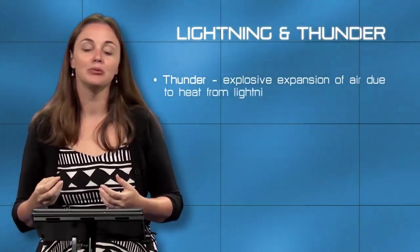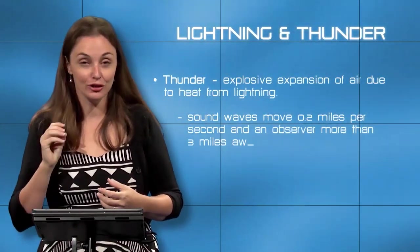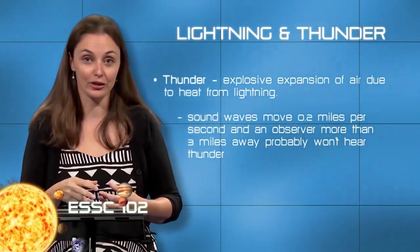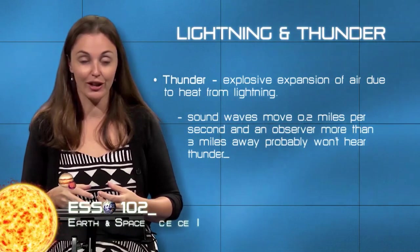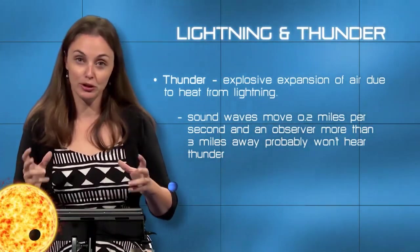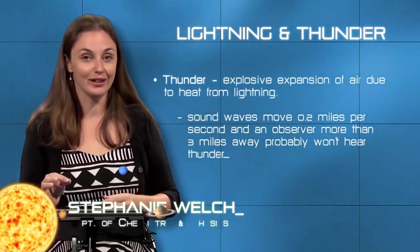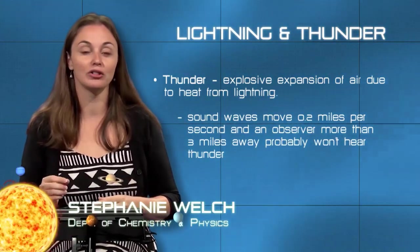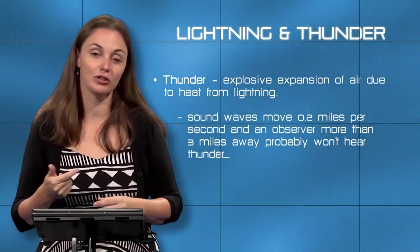The thunder part of a thunderstorm is what you actually hear. Because the speed of sound is substantially slower than the speed of light — the speed of light is 300,000 kilometers per second, and the speed of sound is about 0.3 kilometers per second — you see the lightning far, far quicker than you hear the thunder.